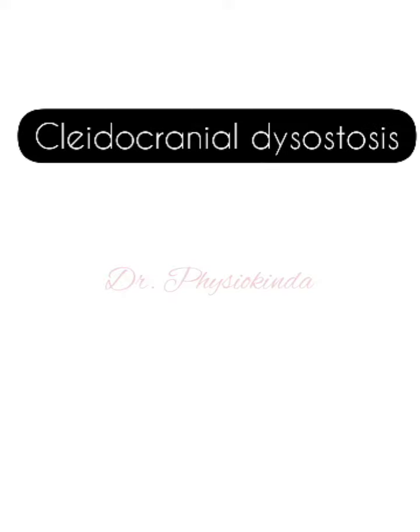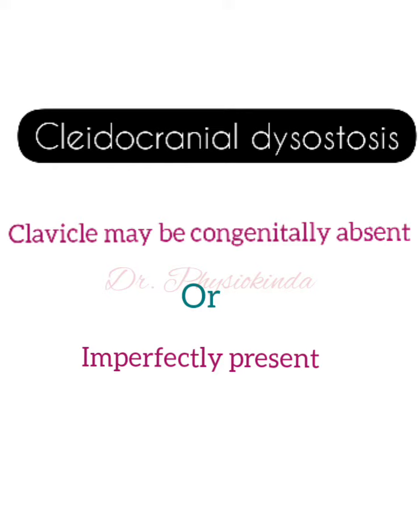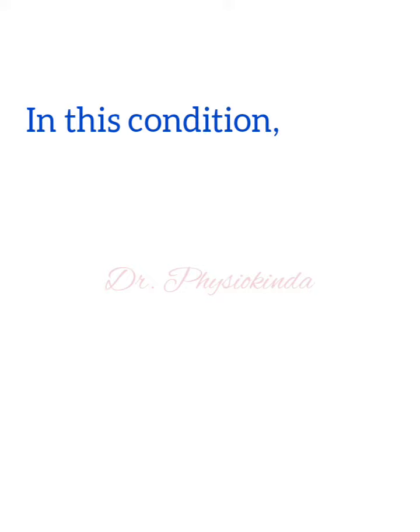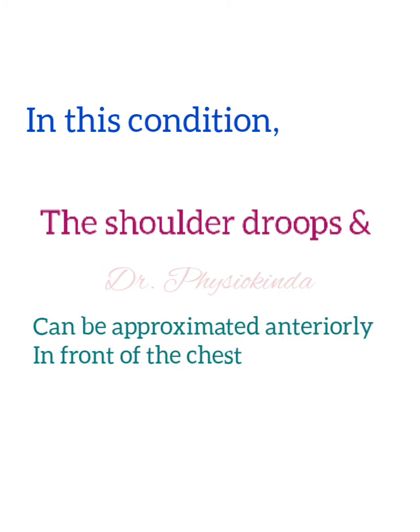Cleidocranial dysostosis is a condition in which the clavicle may be congenitally absent or imperfectly present. As a result of this condition, there may be a shoulder drop because of the absence of the clavicle, and the shoulders can be approximated anteriorly in front of the chest.